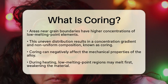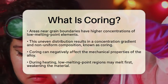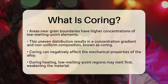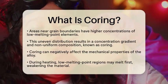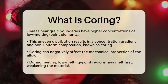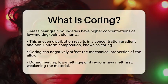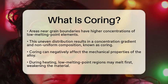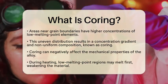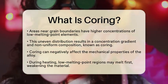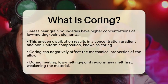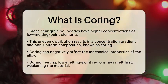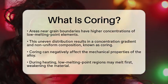Coring can significantly impact the mechanical properties of the alloy. For example, when a cored alloy is heated, the regions with the lower melting point, usually near the grain boundaries, may melt first. This melting can compromise the structural integrity of the material, making it weaker and less durable.